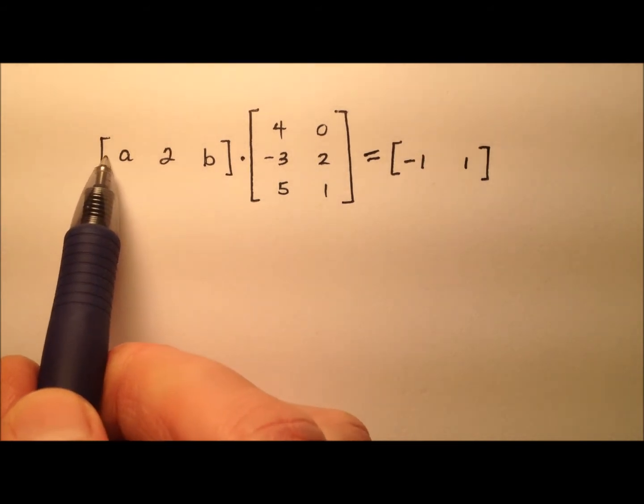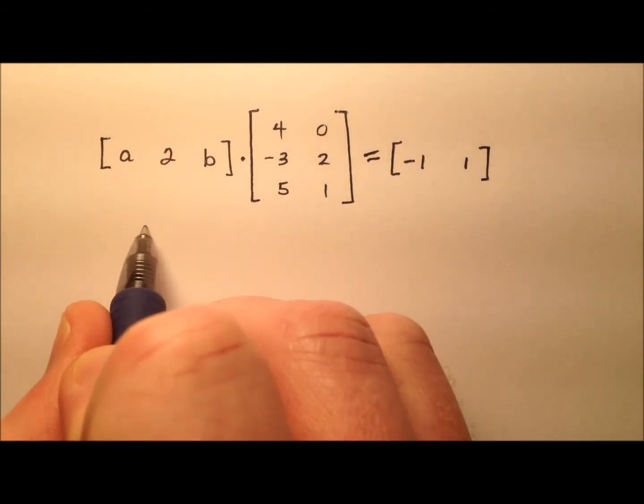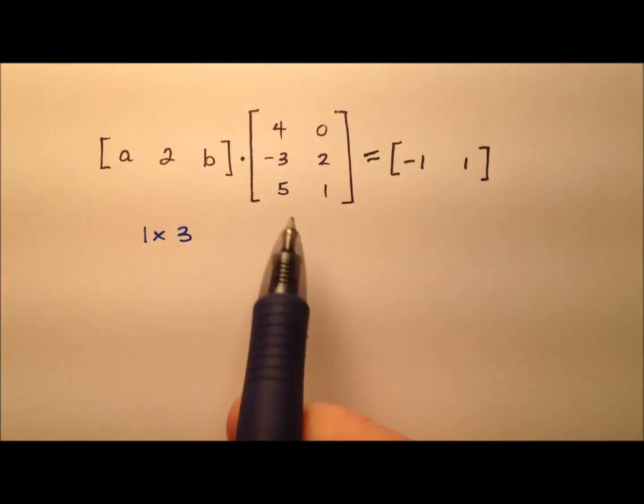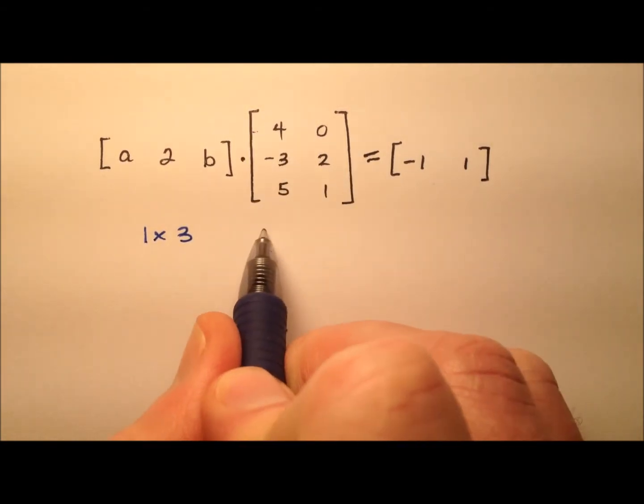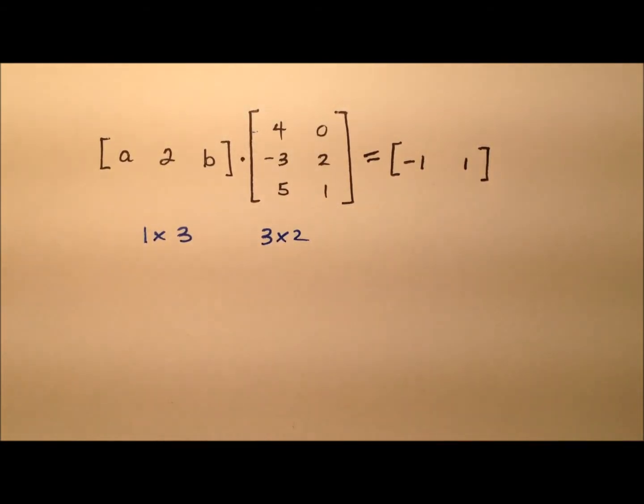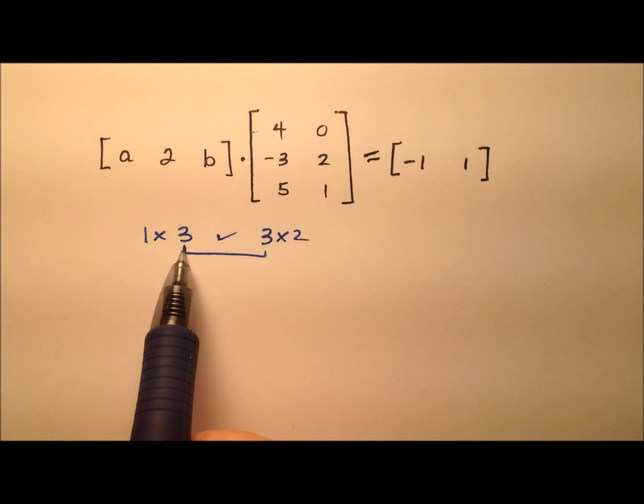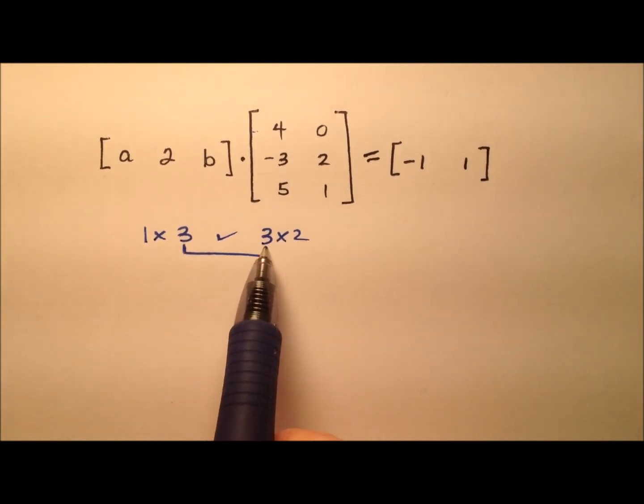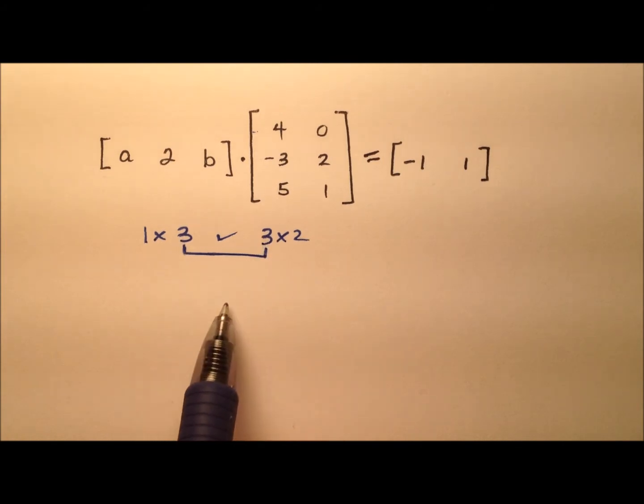Okay, so the dimensions here, we have one row and three columns, so it's a one by three, and here we have three rows by two columns, so it's a three by two. These values in the middle are the same, so we're good to go, because remember, the number of columns in the first one and the number of rows in the second one have to be the same value, and they are, they're both three, so we're okay.